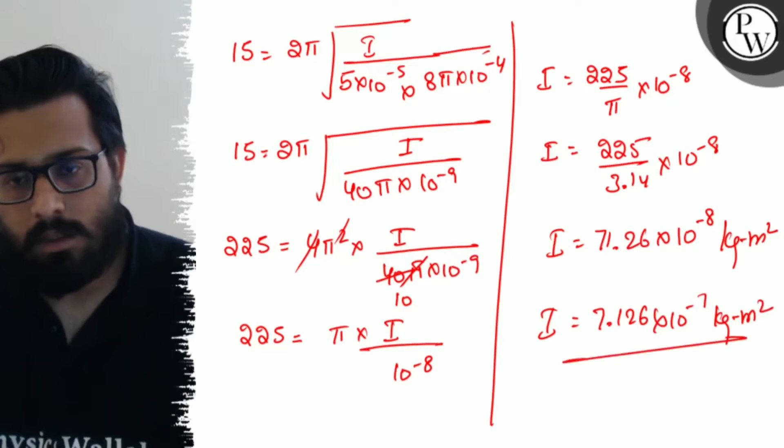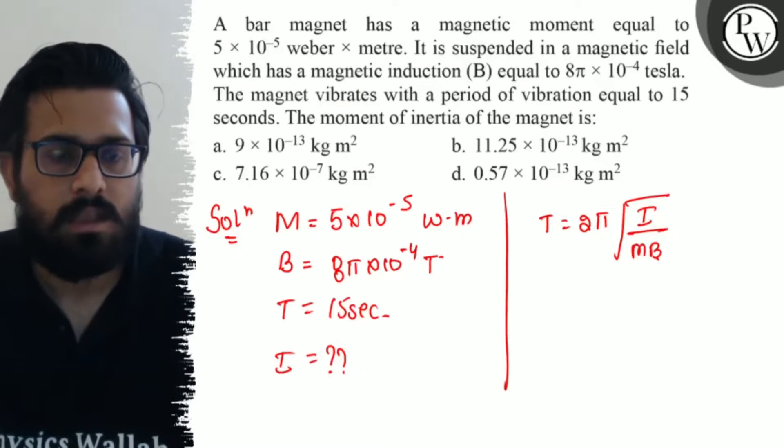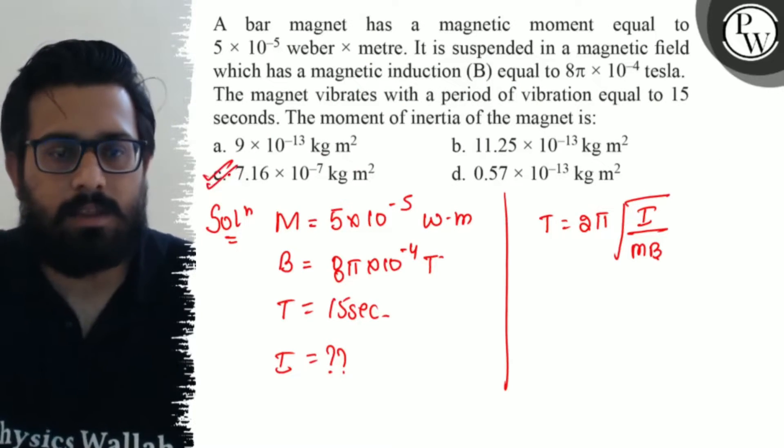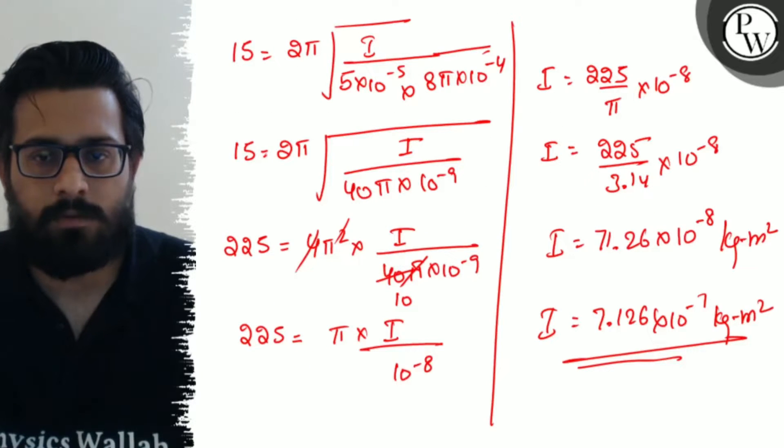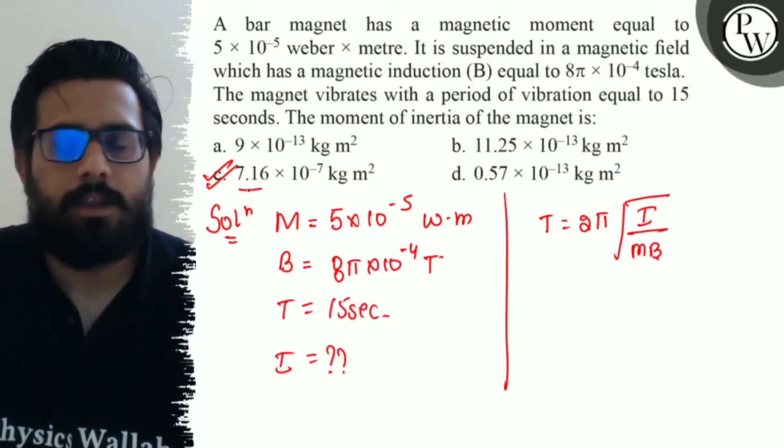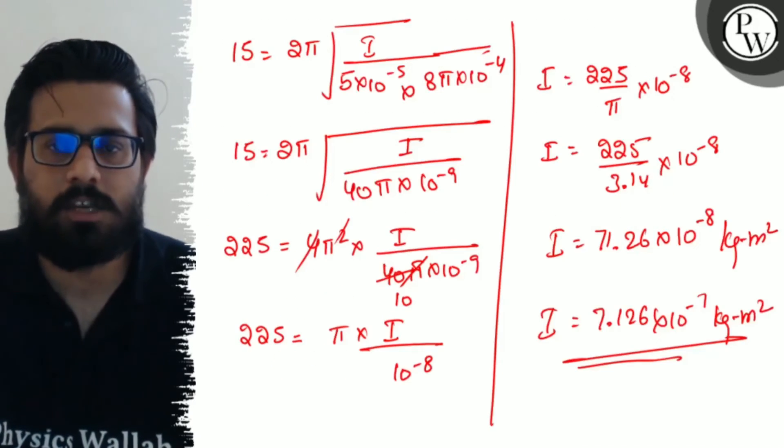Solving it further, we get a value of 7.16 × 10^-7 kg·m². Hence your option number C is absolutely correct.